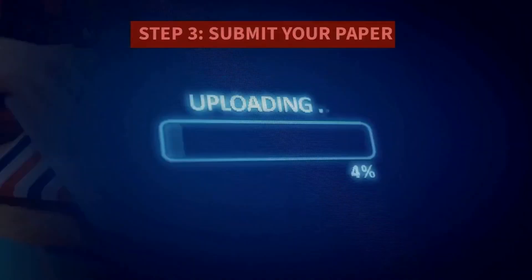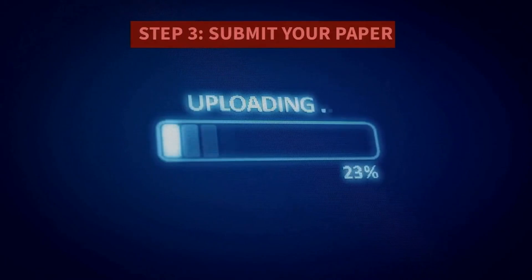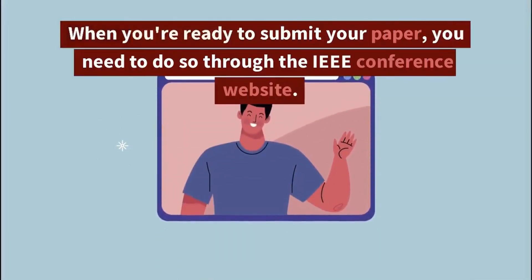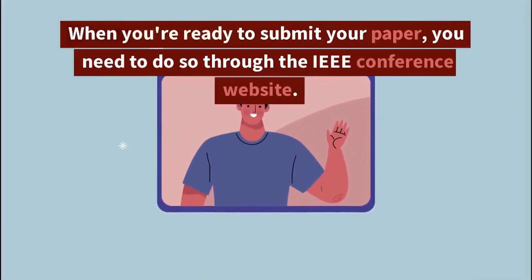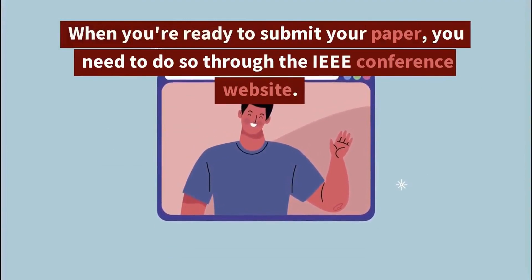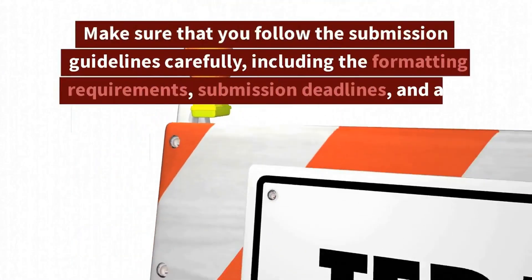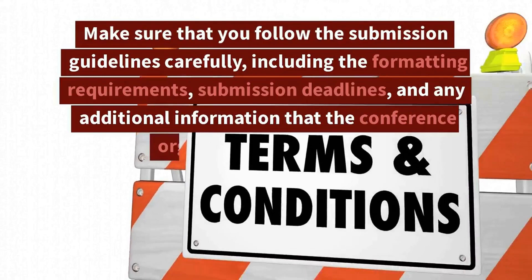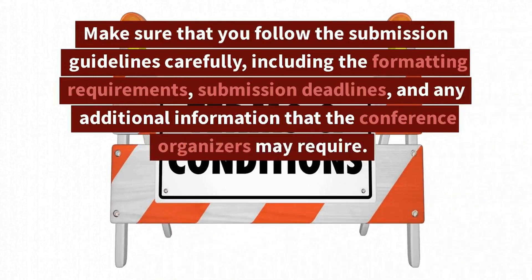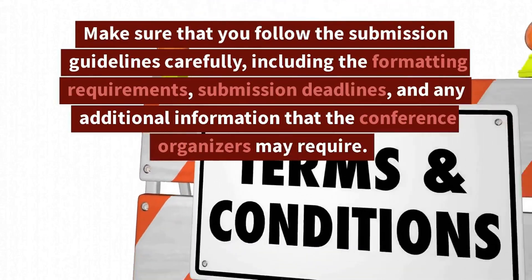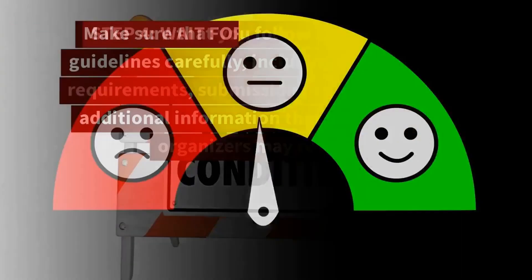Step 3: Submit Your Paper. When you're ready to submit your paper, you need to do so through the IEEE conference website. Make sure that you follow the submission guidelines carefully, including the formatting requirements, submission deadlines, and any additional information that the conference organizers may require.